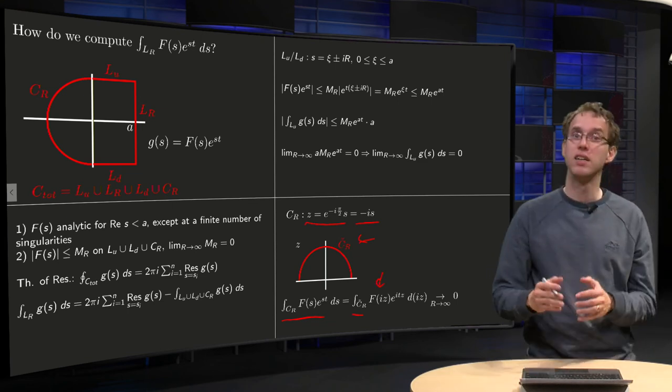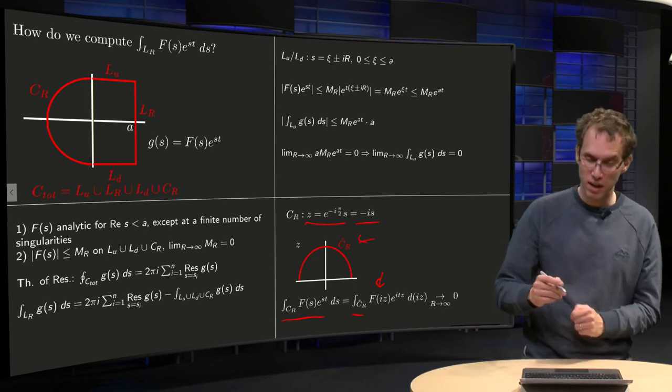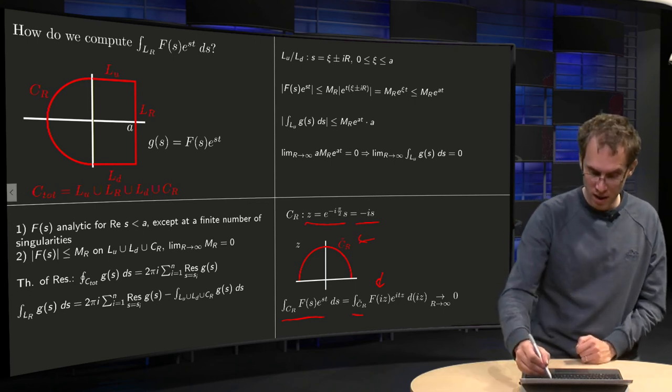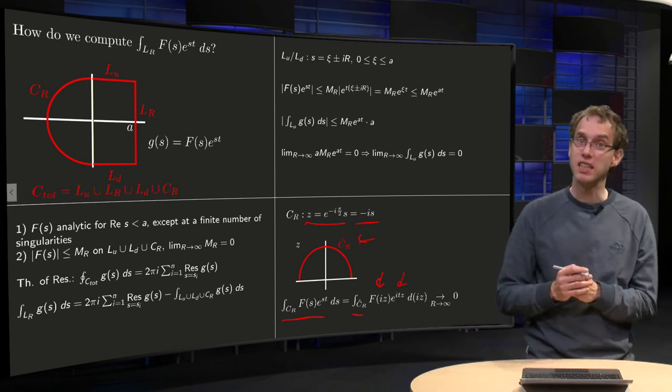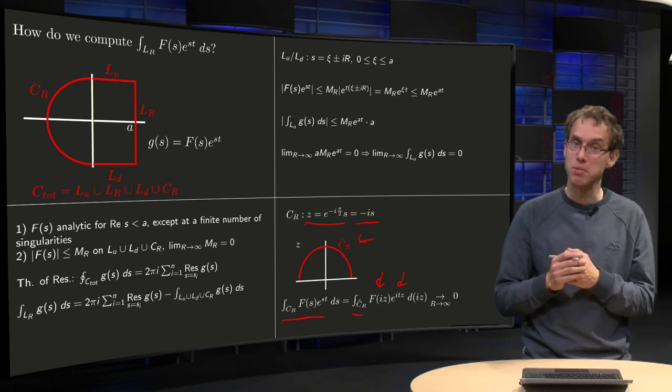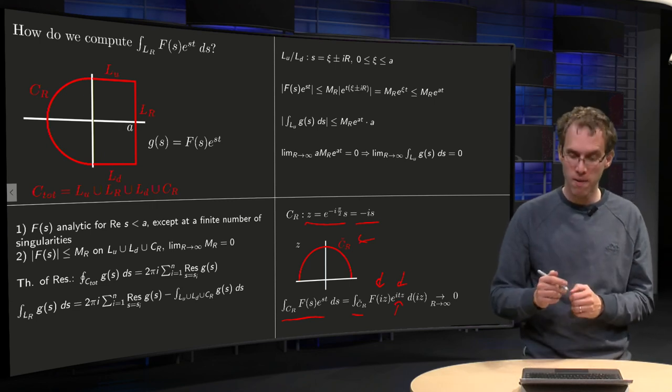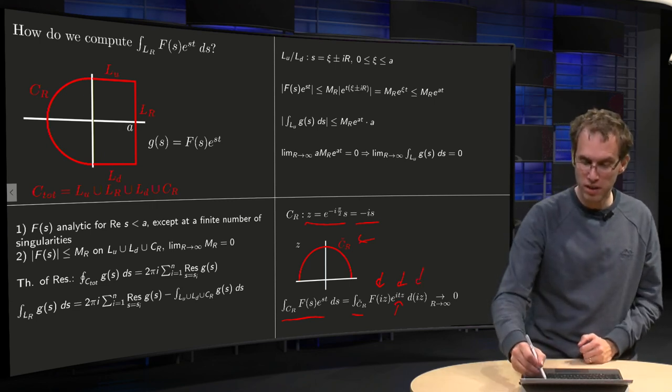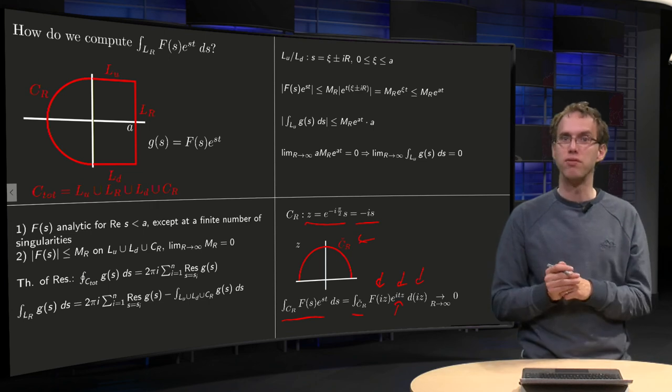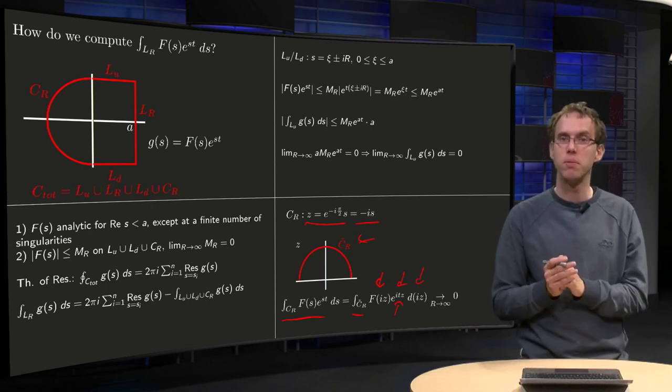Integral along C_R of F times e^(st) ds becomes the integral along the upper half plane, capital F(iz), which is still bounded by M_R going to 0, and here instead of e^(st), we get e^(itz), but t is positive, times d(iz), so we can just take the i in front to get the dz, that doesn't bother us.